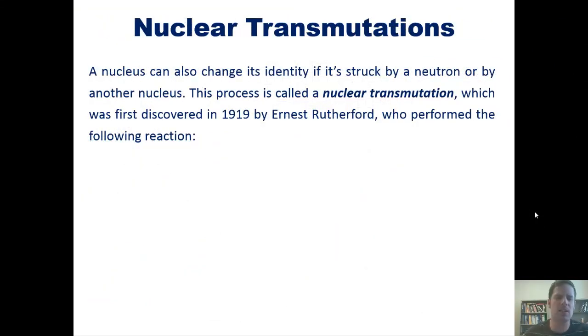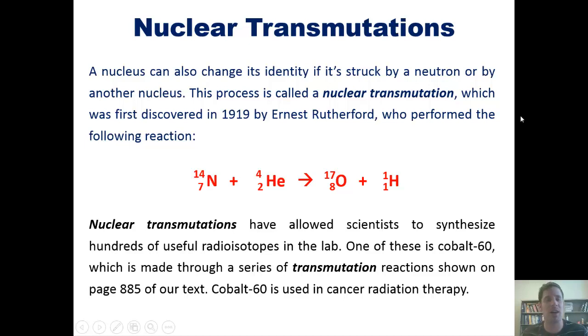Now, a nucleus can also change its identity if it's struck by a neutron or by another nucleus. This process is called nuclear transmutation, which was first discovered in 1919 by Ernest Rutherford who performed this reaction, where he bombarded nitrogen-14 atoms with helium-4 or alpha particles and transformed some of those into oxygen-17 and hydrogen-1 atoms. Nuclear transmutations have allowed scientists to synthesize hundreds of useful isotopes in the lab. One of these is cobalt-60, which is made through a series of transmutation reactions shown on page 885 of our text. Cobalt-60, just so you know, is used in cancer radiation therapy.